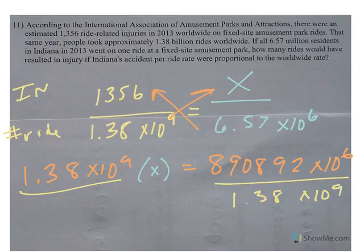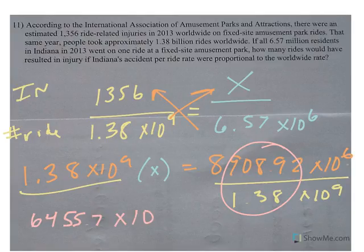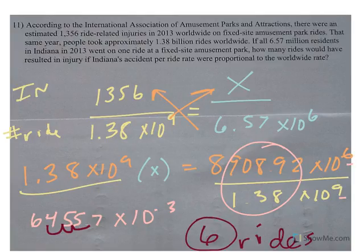When I divide these two, I get 6,455.7 times 10 to the 6 minus 9 is negative 3. Now I need to change this to standard form because this doesn't make sense. Negative 3, it gets smaller. One, two, three. So approximately 6 rides will result in injury if all 6.57 million residents take a ride.